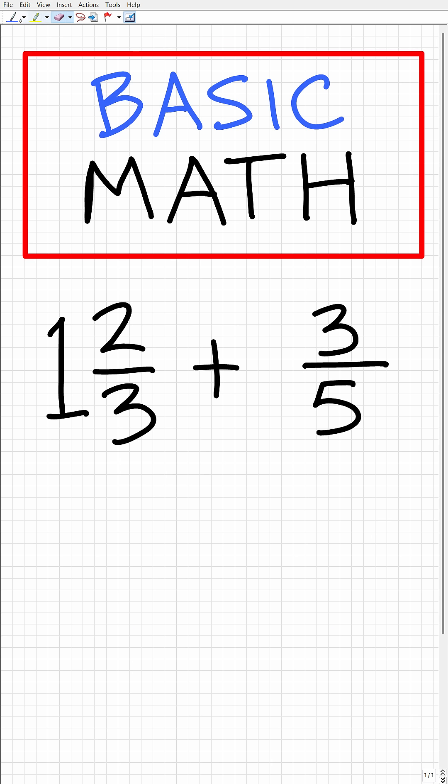Okay, so to add or subtract fractions, you need to have the same denominator. All right, so let's go ahead and convert this fraction into an improper fraction. The way we do that is we take this denominator three and multiply it by the big number, so three times one is three, and then we're going to add two. So that is going to be five, so we have five over three plus three over five.